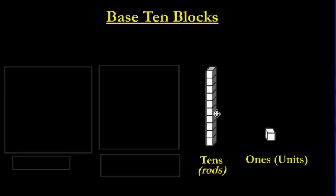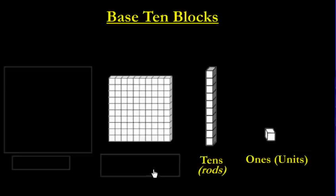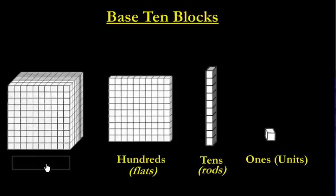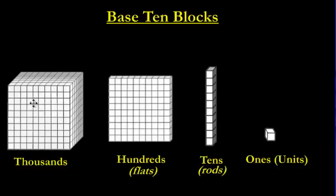Ten of these rods side by side makes a hundred — we call those flats. And then 10 of these hundreds makes a thousand block; the big jumbo ones are big. The rule is 10: every time you have 10 of something, you put them together and use them to make the next level of block. The ones become the tens, the tens become the hundreds, and so forth.